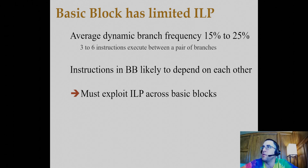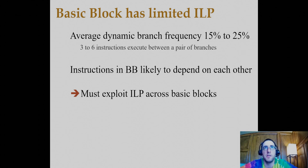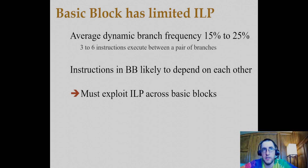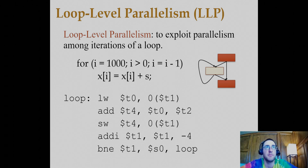Basic blocks have a limited amount of instruction-level parallelism. A basic block usually manipulates the same data within a local region of the program. Branch frequency in some programs tends to be about 15 to 25 percent of instructions, meaning roughly three to six instructions between each pair of branches — so each basic block is roughly three to six instructions long. Instructions in a basic block are highly likely to depend on each other, so we want to find ways to exploit ILP across basic blocks. The most prevalent approach is loop-level parallelism.